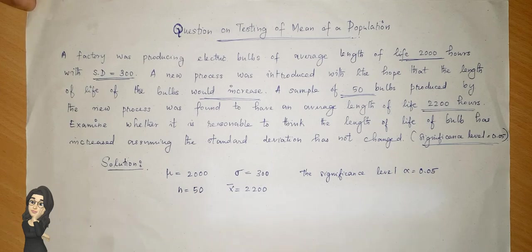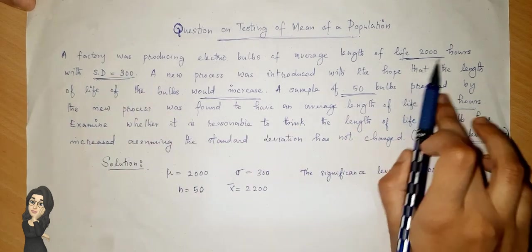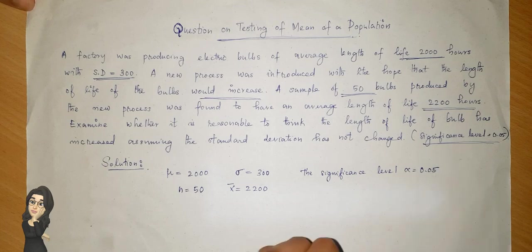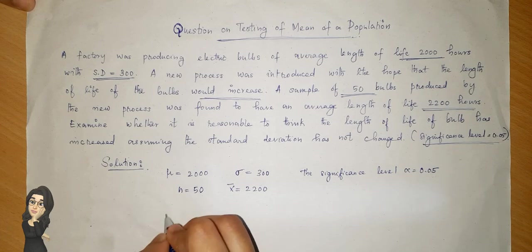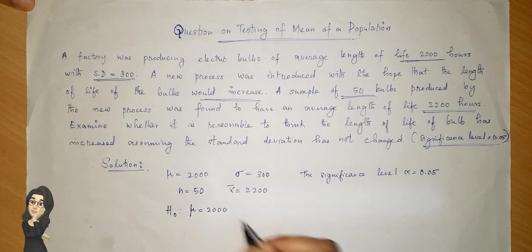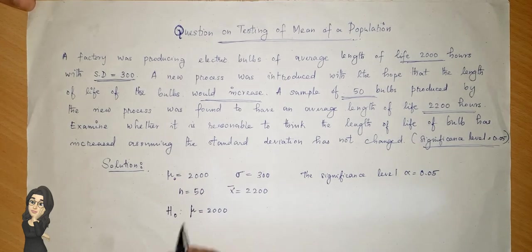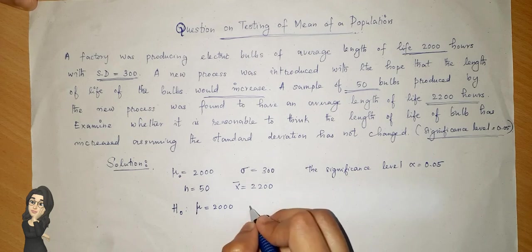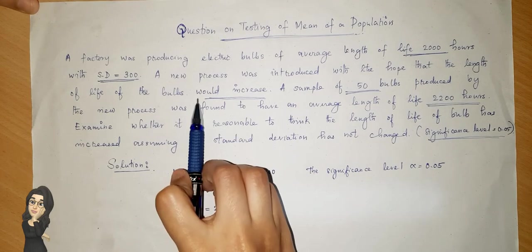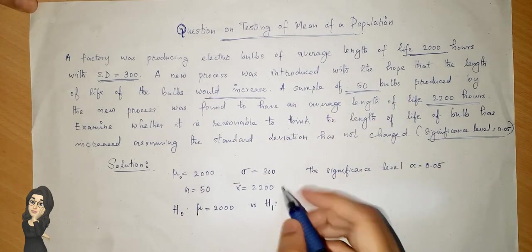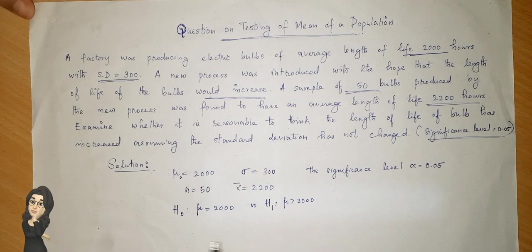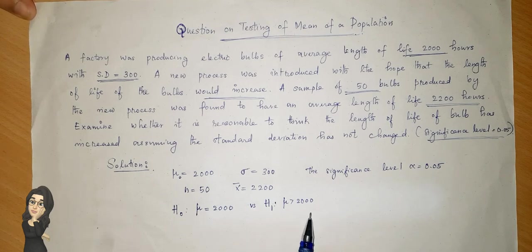Now we write the hypothesis. Initially the mean was 2000 and we have to check whether it has changed. So the null hypothesis H0 is mu equal to 2000, against the alternative hypothesis H1 where mu is greater than 2000, since we are checking whether the mean has increased from 2000.